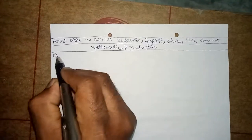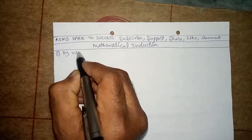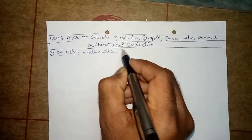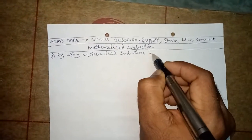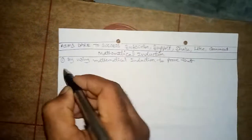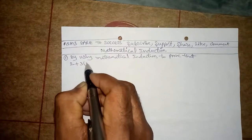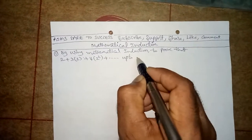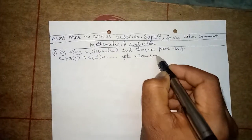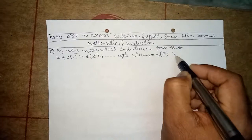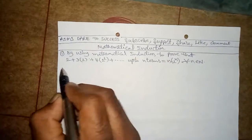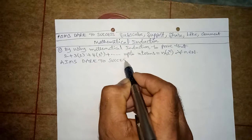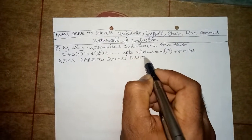The question is: by using mathematical induction, prove that 2 plus 3 into 2 plus 4 into 2 squared plus and so on up to n terms is equal to n into 2 power n, for all n belongs to natural numbers.